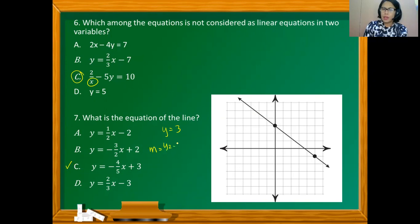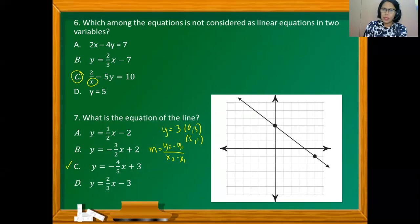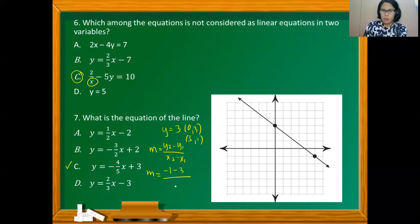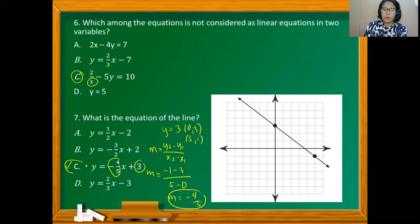Calculating the slope using two points: (0,3) and (5,−1). We have m = (−1−3)/(5−0) = −4/5. So the slope is negative 4 fifths and the y-intercept is 3. Therefore option C is the correct answer.